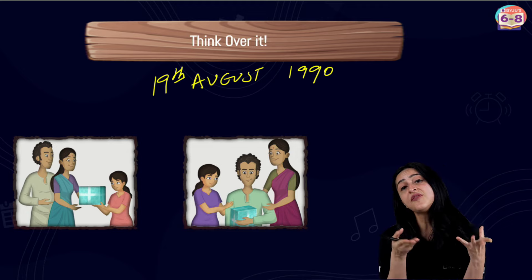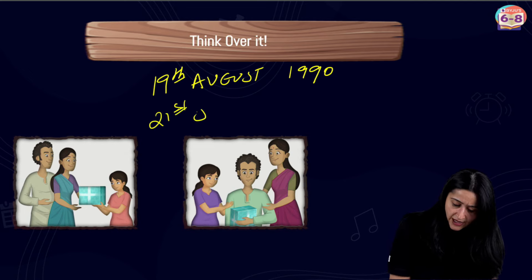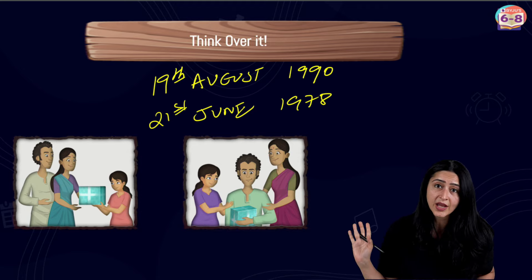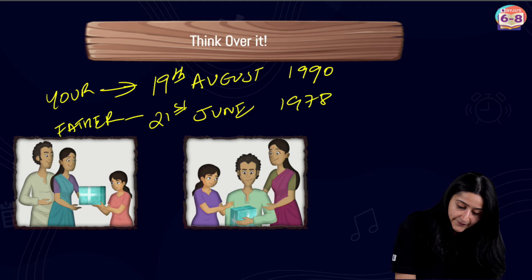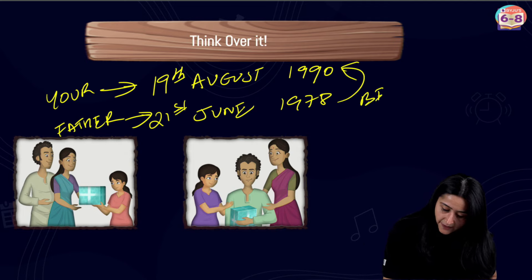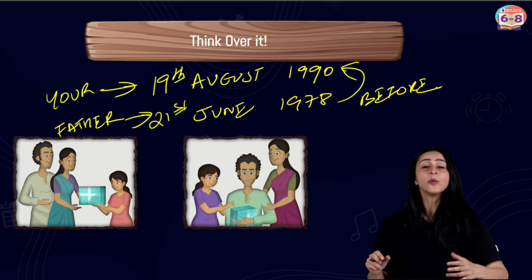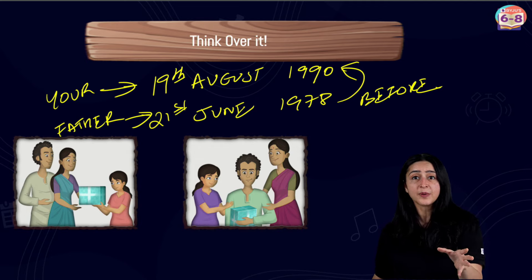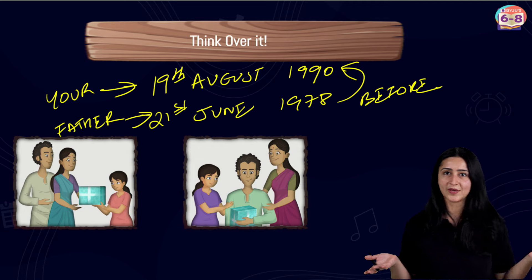Similarly, if I ask when is your father's birthday, you might say 21st June 1978. Now, there are two events: your birthday and your father's birthday. We can easily see that your father was born before you — because 1978 comes before 1990. Without these dates, others would not know when you or your father were born. Dates are so important — that's why there is a special column for date of birth on most important documents like a marks card, Aadhar card, driving license, or passport.